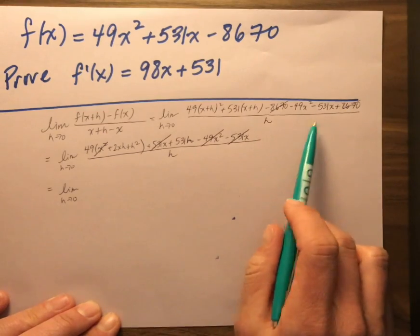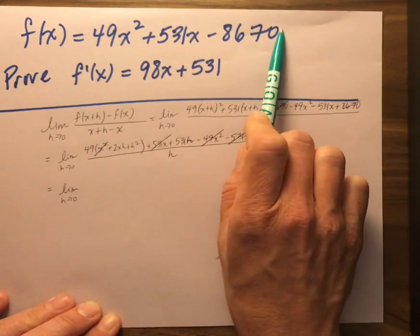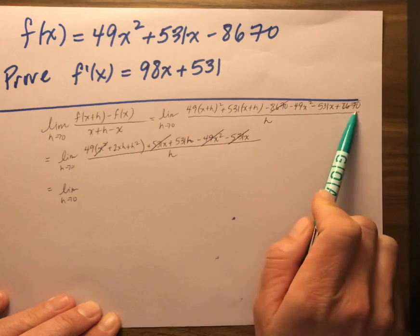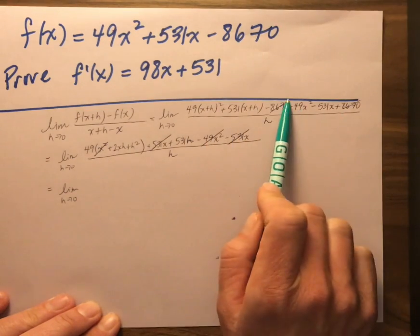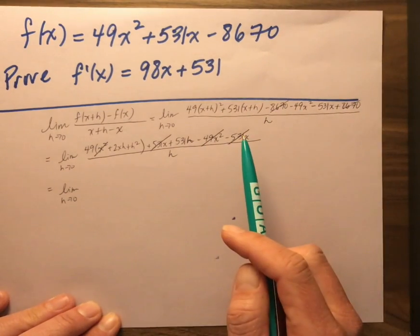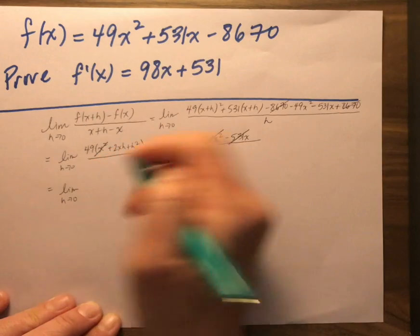And also just kind of going back. When we're taking a derivative of a function, notice that constant knocks out. So a constant, the derivative of a constant just goes away, goes to 0.